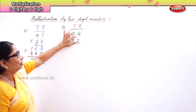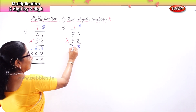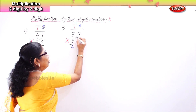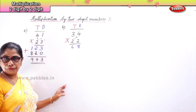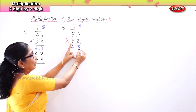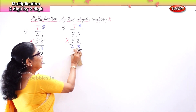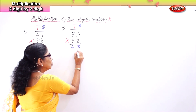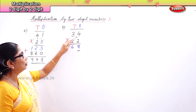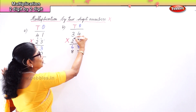Cover up the first 2 (tens digit) and work with the ones digit 2 first. Four twos are eight — write 8 in the ones place. Three twos are six — write 6. Now we go to the 2 in the tens place. Because 2 is in the tens place, we put a zero or a dash in the ones place before multiplying.